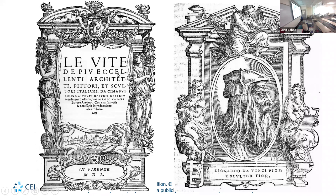The title translates as 'The Lives of the Excellent Architects, Painters, and Sculptors' — by Giorgio Vasari. Basically, he wrote about these people like they were rock stars, which they were at the time. He gave a biography, listed the works they did, and offered a critique of their relative strengths and contributions to the arts.